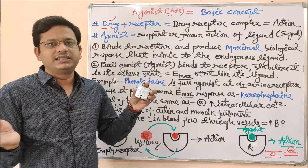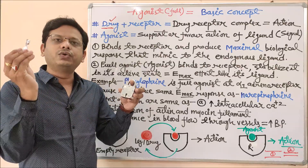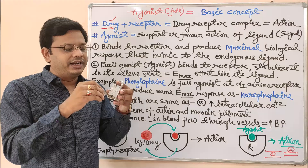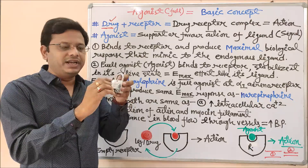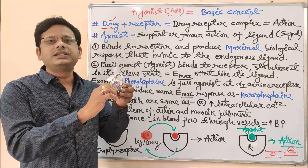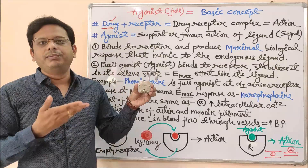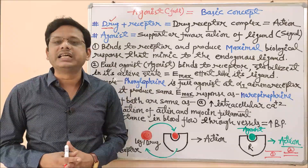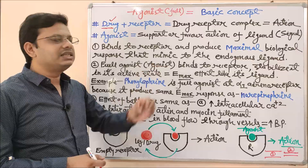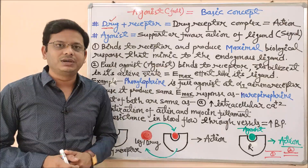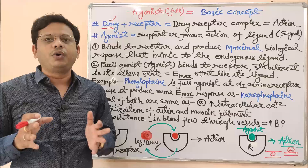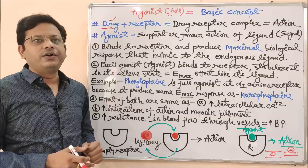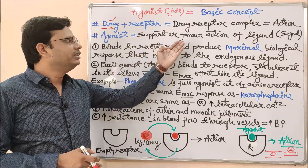Whenever any signal molecule, ligand molecule, or agonist comes toward the receptor binding site and occupies that place, they form a drug-receptor complex, and only then is their biological activity accomplished. We then get pharmacological, desirable, or sometimes undesirable activity. This is the basic equation regarding the agonist concept. Later in the video we will also see antagonist, competitive antagonist, and non-competitive antagonist.